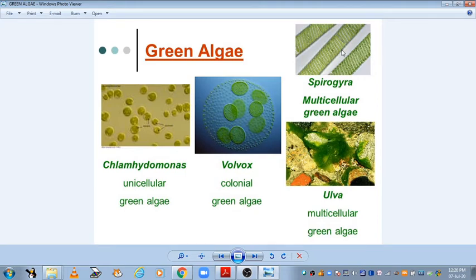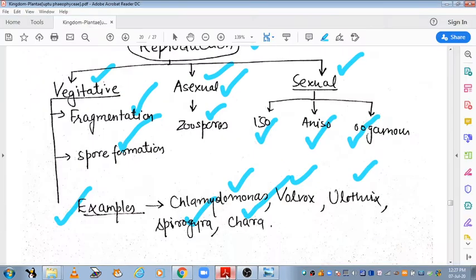You can see here, that is Spirogyra, which has spirally coiled chloroplasts. It is a filamentous form. This is Chlamydomonas, a unicellular form. This is the detailed structure. Volvox is a colonial form. You can see here it is a whole Volvox colony. These are examples of unicellular, colonial, and filamentous forms. Ulothrix is also a multicellular or filamentous form.